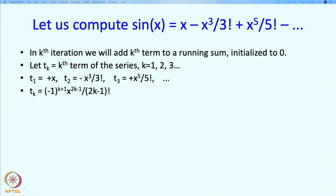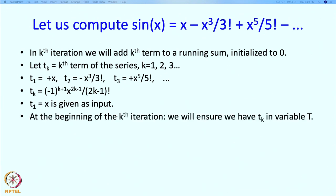We will calculate these terms in consecutive iterations and add them to a running sum initialized to 0. T1 is available at the beginning of the first iteration. We would like T2 available at the beginning of the second iteration, T3 at the beginning of the third, and so on. Our plan: at the beginning of the kth iteration, we will ensure we have T_k in variable T.